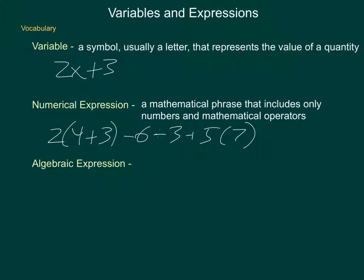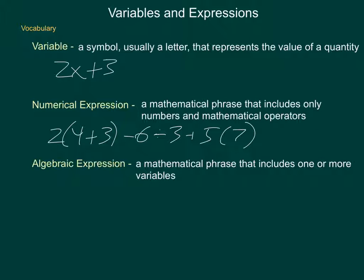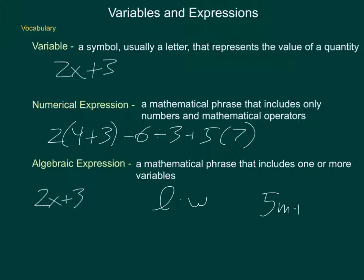Specifically, an algebraic expression is defined as a mathematical phrase that includes one or more variables. This can take on a lot of forms. For instance, our original 2x plus 3 has the variable x. We could say L times W, which includes only variables. We could say 5M plus 2P divided by R, which has a mixture of numbers, operators, and variables — but simply because it has at least one variable, it is an algebraic expression.